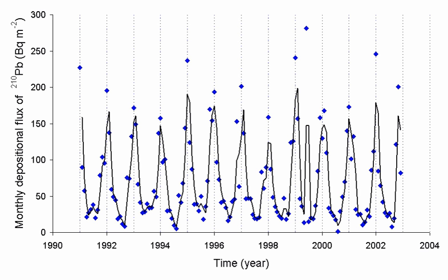in low areas such as basements and crawl spaces. Radon can also occur in ground water, for example, in some spring waters and hot springs. Epidemiological studies have shown a clear link between breathing high concentrations of radon and incidence of lung cancer. Radon is a contaminant that affects indoor air quality worldwide.